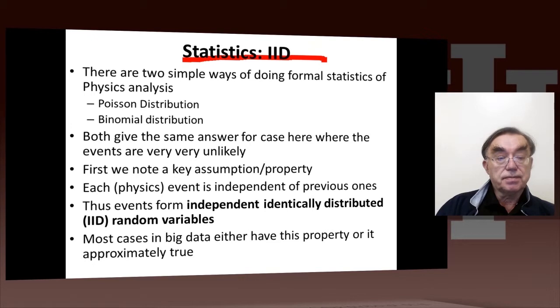Random variables have probability distributions. We've already seen in the last lecture two types of distributions: Gaussian distributions, or the so-called normal distribution, and uniform distributions.